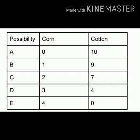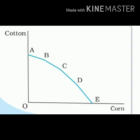Now for the diagram: on the X-axis we are measuring corn and on the Y-axis we are measuring cotton. The curve shows the maximum amount of corn that can be produced in the economy for any given amount of cotton, and vice versa — it shows at what ratio the economy can produce corn and cotton.